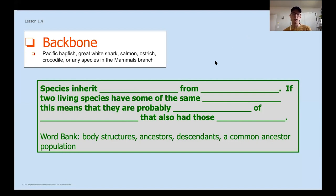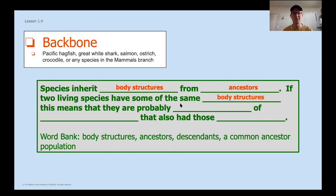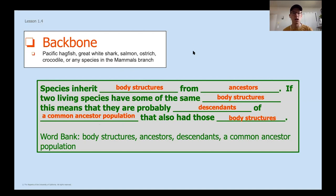One of the big concepts for this chapter is that species inherit their body structures from ancestors — which helps us solve where a mystery fossil belongs in the museum. If two living species have some of the same body structures, this means they are probably descendants of a common ancestor that also had those same body structures. Body structures are key to tying together which species had common ancestors.